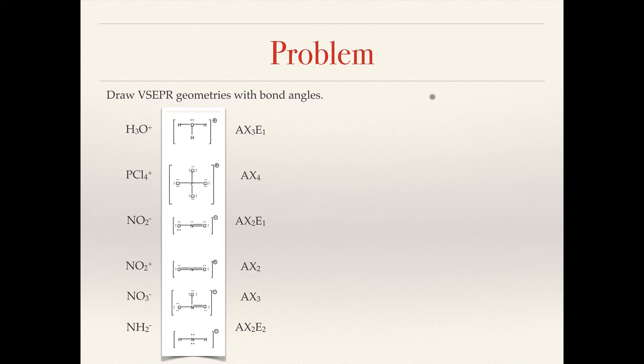If you have two electron groups, the most efficient manner to do so is a straight line or a linear shape. Three would be trigonal planar, and four, although you might anticipate it being square planar, it's actually tetrahedral. And we have to make sure we pay attention to the three-dimensional geometry there.